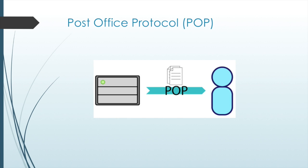Post Office Protocol enables a workstation to retrieve email from a mail server. With POP, mail is downloaded from the server to the client and then deleted on the server. The server starts the POP service by passively listening on TCP port 110 for connection requests. When a client wants to connect, it sends a request to establish a TCP connection with the server. When the connection is established, the POP server sends a greeting, and the client and POP server then exchange commands and responses until the connection is closed or aborted.